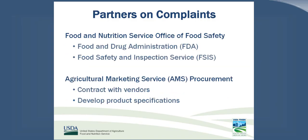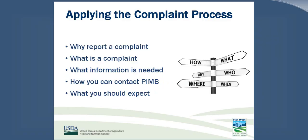Who are our partners on complaints? We work closely with the Food and Nutrition Service Office of Food Safety, who in turn works with the FDA and the Food Safety and Inspection Service, FSIS. We also work with the Agriculture Marketing Service, AMS Procurement, who contracts with vendors and develops product specifications. In a prior webinar, we discussed the five W's — who, what, when, where, and why. That webinar was recorded and is available now for online viewing; a link will be provided at the end of today's presentation.